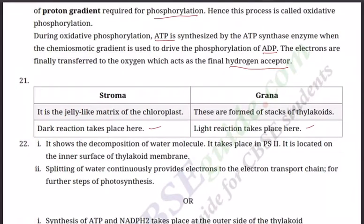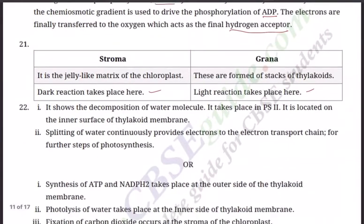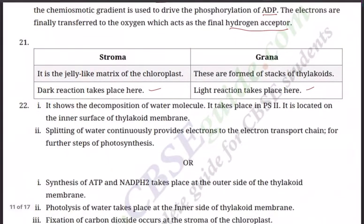Question 22: The photolysis equation — 2H2O becomes 2H+ plus O2 plus 4 electrons. Based on this equation, answer the following. Question 1: Where does this reaction take place in plants? It shows the decomposition of the water molecule. This reaction takes place in PS2, located on the inner surface of the thylakoid membrane. Question 2: What is the significance of this reaction? Splitting of water continuously provides electrons to the electron transport chain for further steps in photosynthesis.